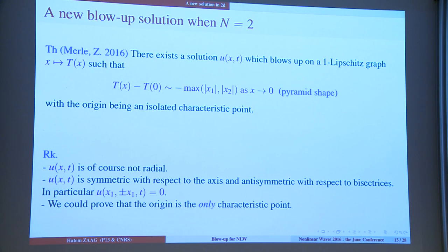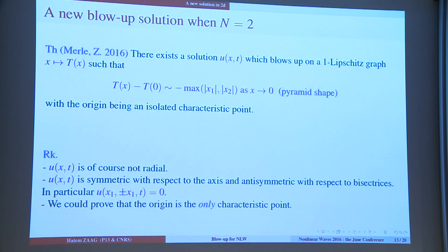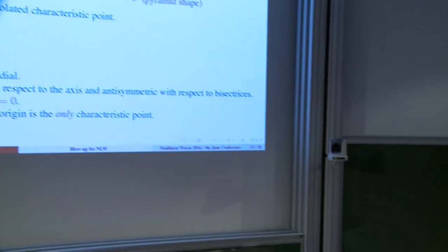Surprisingly, only the origin is the characteristic point; all other points are non-characteristic. This is completely different from the 1D situation where having a zero of the solution is linked to a characteristic point. Here on the bisectors the solution is always 0, but we have non-characteristic points. We prove this only locally, but we are able to say that all other points, even far in space, are non-characteristic.